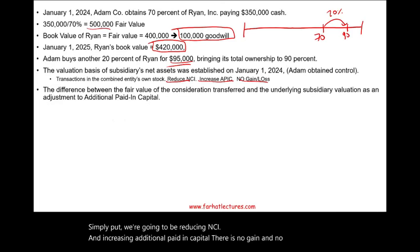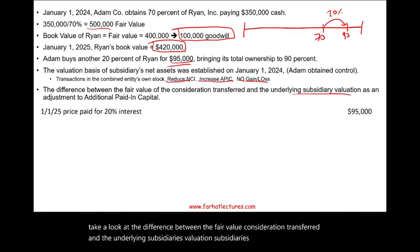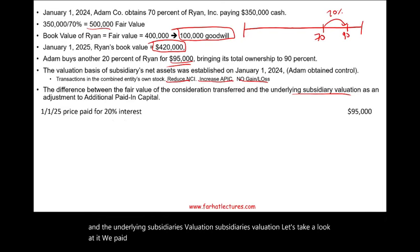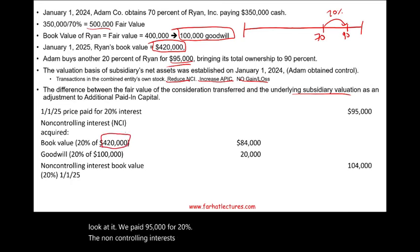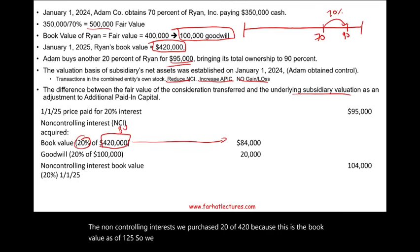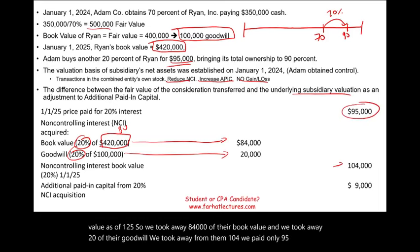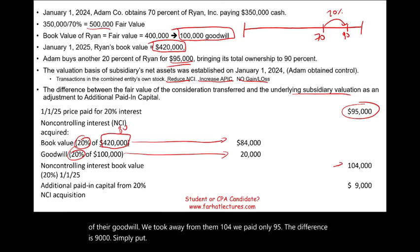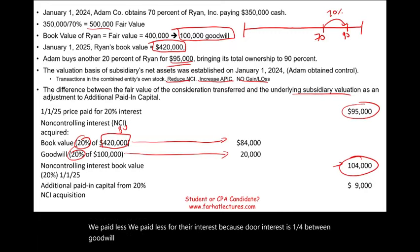Let's take a look at the difference between the fair value consideration transferred and the underlying subsidiary's valuation. We paid $95,000 for 20%. The non-controlling interest — we purchased 20% of $420,000, because this is the book value as of January 1, 2025. So we took away $84,000 of their book value, and we took away 20% of their goodwill — we took away $104,000 from them. We paid only $95,000, so the difference is $9,000. We paid less for their interest.